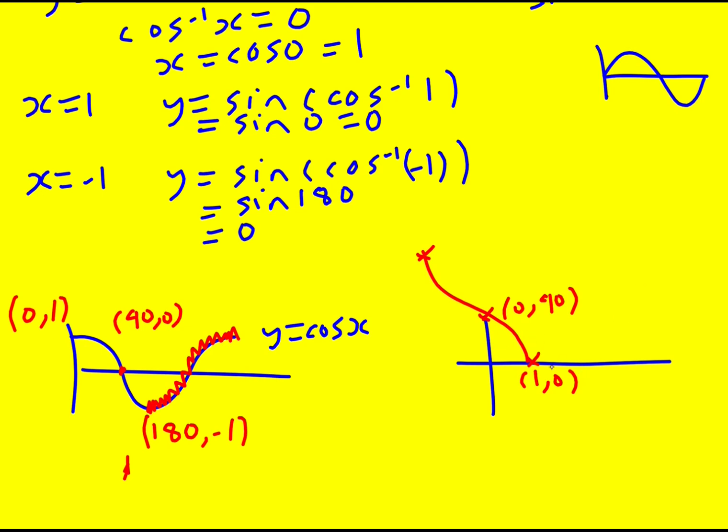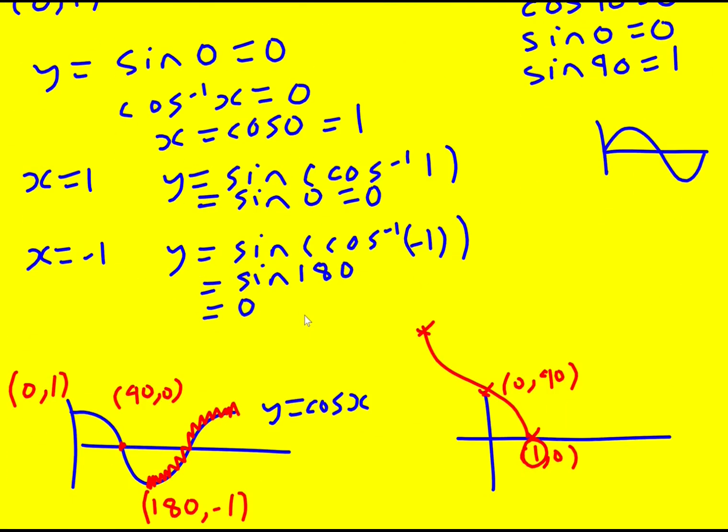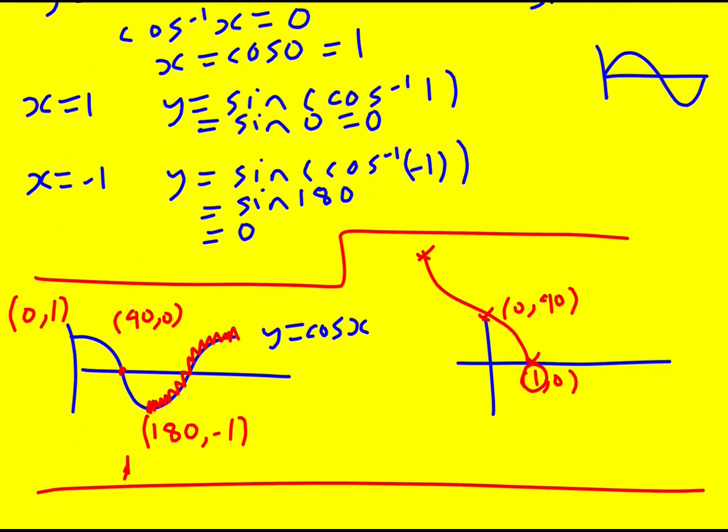And that could assist you with this question, because you can see that if you put in one, you're going to get inverse cos of one is zero, which gives you sine zero and therefore you get zero. If you put in zero, inverse cos of zero you get 90. And if you put inverse cos of minus one, you get 180. So it's a little bit quicker than what I did here, and I hope maybe it clarifies what I've done, basically.